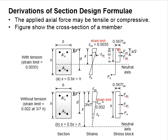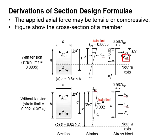The maximum compressive stress of concrete is determined by considering the material factors of safety. The compressive force in the steel bar is calculated based on the stress-strain relationship. FCC refers to the force in the area of the stress block, and its position is at the centroid of the stress block, which is s divided by 2 from the top of the column.